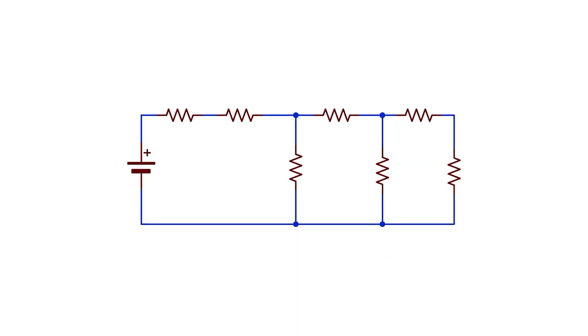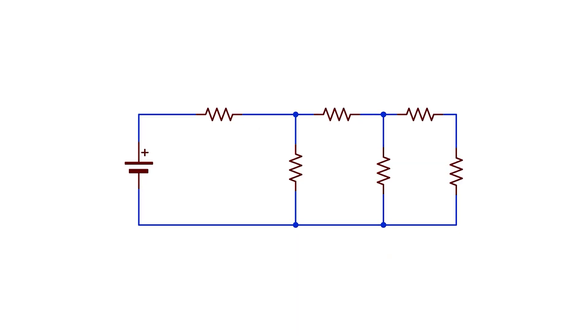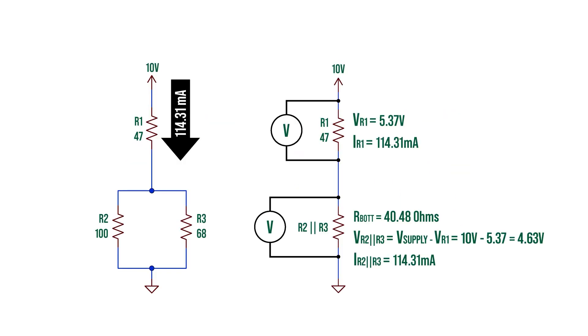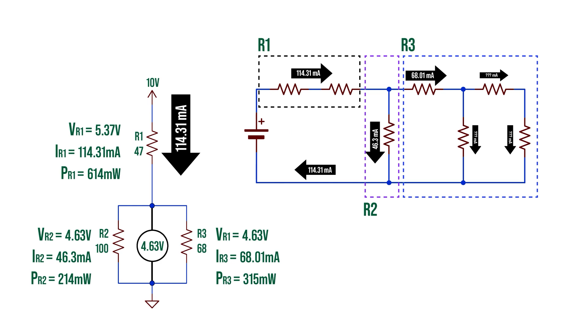In this video, we're going to go over how to take a slightly more complex resistive circuit and simplify it in order to find the total current, independent branch currents, and move on from there. I'm Derek. This is DC to Daylight. Now let's look at resistor combination circuits.